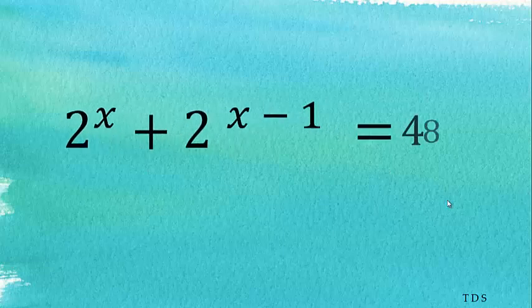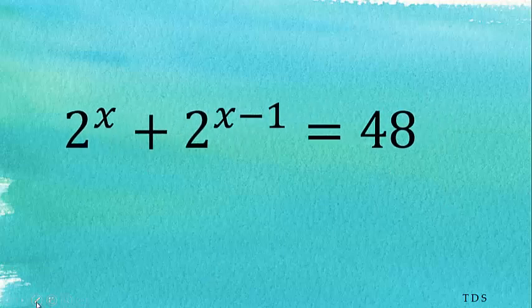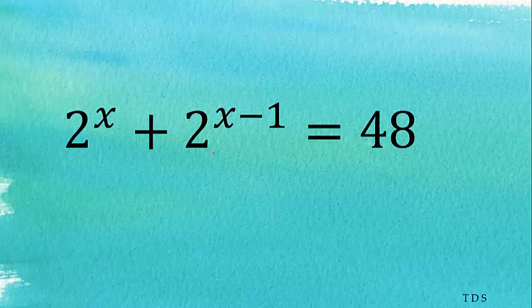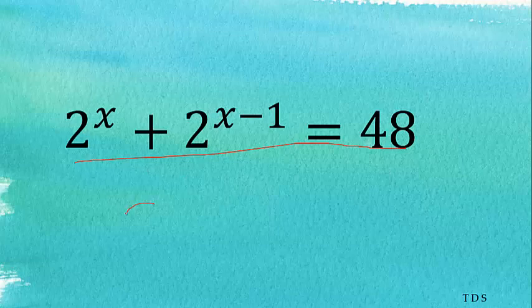Now let's solve the equation: 2 to the power x plus 2 to the power x minus 1 equals 48. I will solve this question now. Before we solve this, let's understand the concept.